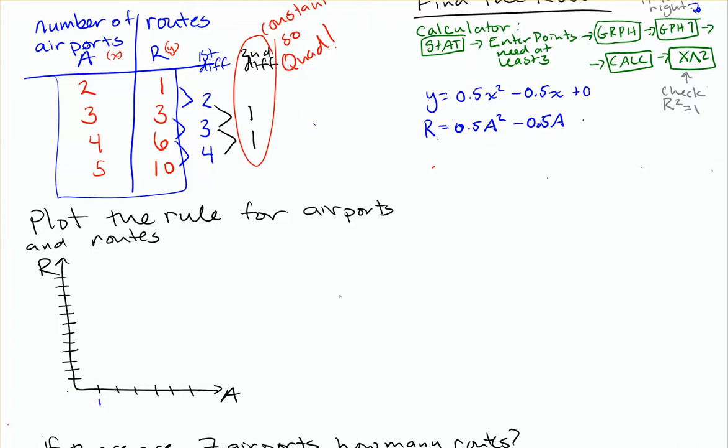Number of airports. One, well, having one airport, you're not going to fly anywhere, right? You just have one place to go and you're already there, so you're not going to fly there. So we'll start with two.